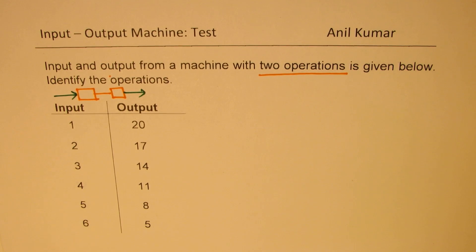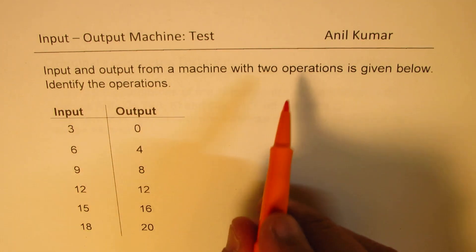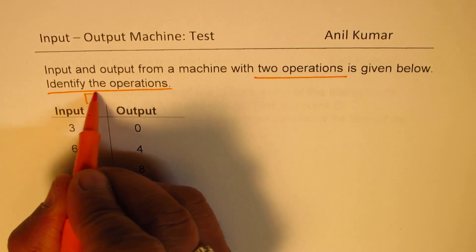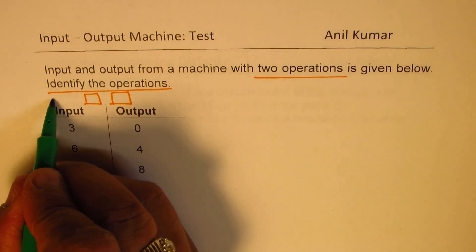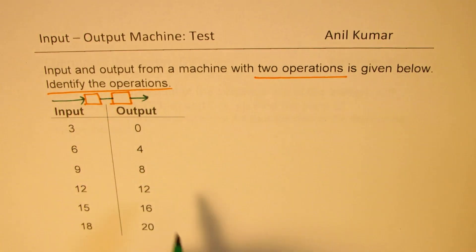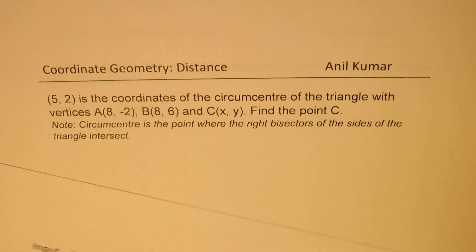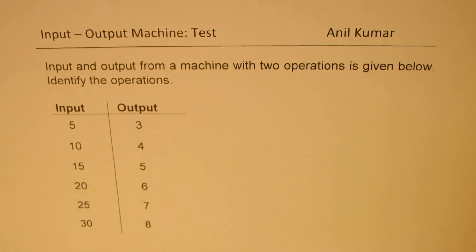We have three questions which are similar with subtle differences. I'd like you to pause the video, copy these questions, and work them out. There are two operations you need to identify — what happens first and then what happens to give you the required output. You can pause the video, copy them, try it, and then we'll go to the third question.